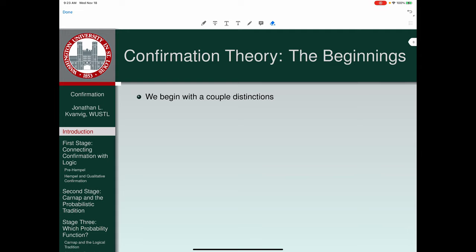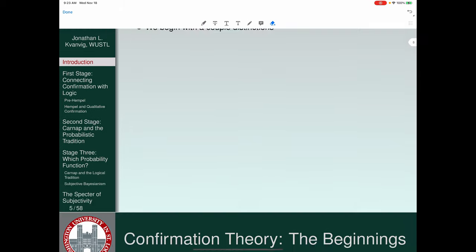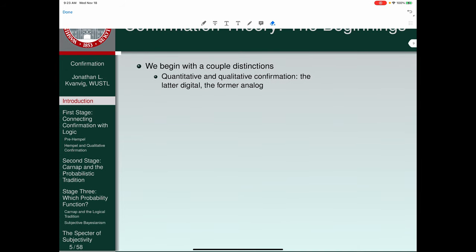So the early task was to see can we avoid this normative conception of confirmation? Can we make sense of confirmation in a way that makes it, sometimes the word was objective, sometimes it was logical, typically they were put together. We're looking for an objective and logical notion of probability. So we start out confirmation theory at the beginning with a couple of distinctions. First, let's distinguish between quantitative and qualitative confirmation. The latter is digital, the former is analog. So quantitative is measurable in terms of discrete units. Qualitative confirmation is just a more or less matter with no precise numerical units being attached to it.